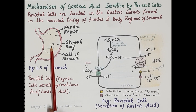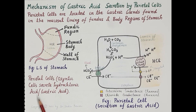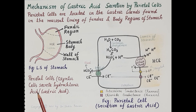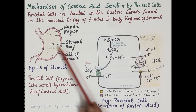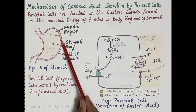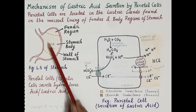Gastric acid activates pepsinogen to pepsin, and pepsin is a proteolytic enzyme that digests the proteins found in the food. Gastric acid is secreted by the parietal cells, which are located in the gastric glands.